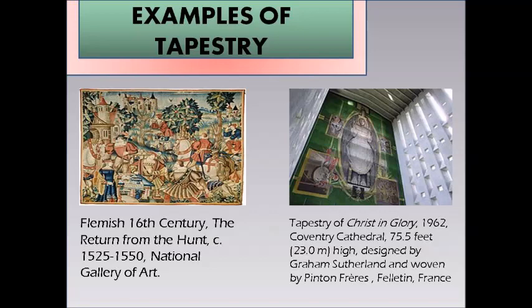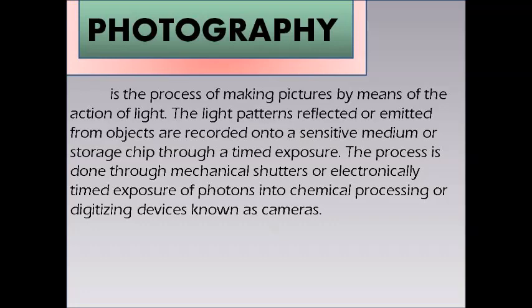Photography is the process of making pictures by means of the action of light. Light patterns reflected or emitted from objects are recorded onto a sensitive medium or storage chip through a time exposure. The process is done through mechanical shutters or electronically timed exposures of photons in devices known as cameras. Traditionally, the product of photography has been called a photograph, often abbreviated as photo; in digital photography, the term image has begun to replace photograph.